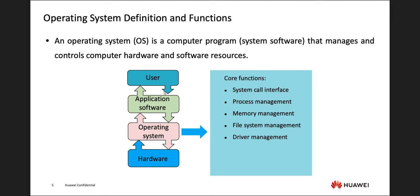An operating system has different components. It needs to maintain understanding of the hardware — so when you plug in your keyboard and mouse into your laptop or PC, the OS needs to understand how to translate that. It has core functions: a system core interface that checks what device is connected, process management like a task manager, memory management, file system management where you store files, and driver management. That's why sometimes you have to install drivers and it doesn't work because of the driver management feature of the OS.